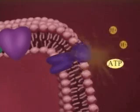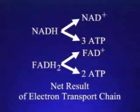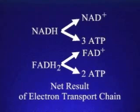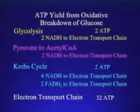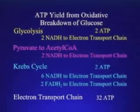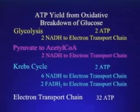Each NADH yields three ATPs. FADH2 yields two. The electron transport chain greatly increases the yield of ATP from the breakdown of glucose. Only four ATPs result from glycolysis and the Krebs cycle. Electron transport yields 32 more.